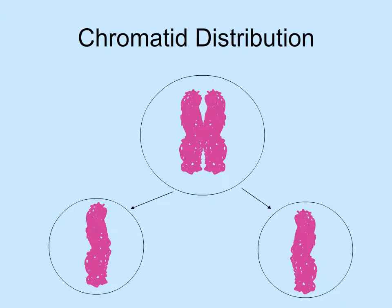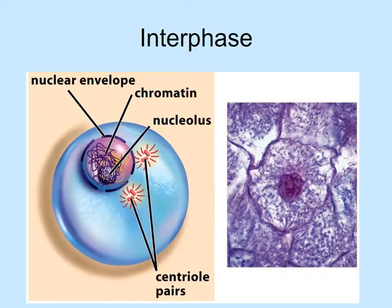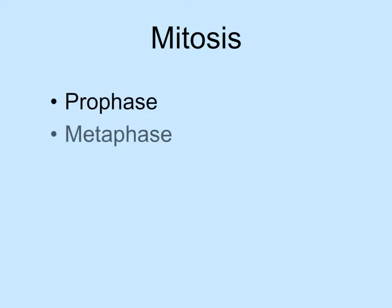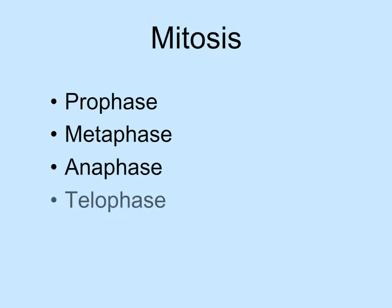Let's look at the steps of mitosis in detail. Remember, mitosis refers to the division of the nucleus, and interphase is not a part of mitosis — it consists of the G1, S, and G2 phases when the cell is performing its regular functions, growing, duplicating its chromosomes, and preparing for division. Mitosis consists of four basic stages: prophase, metaphase, anaphase, and telophase. This sequence of phases can be easily memorized using the mnemonic PMAT.